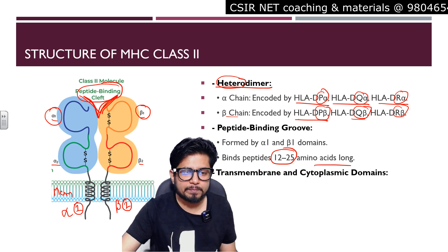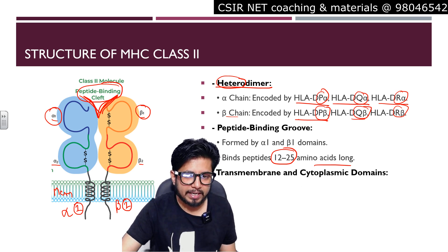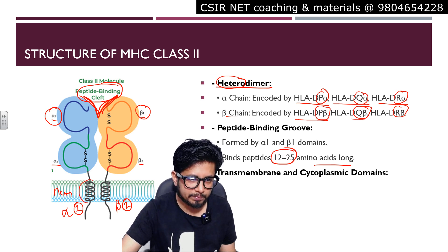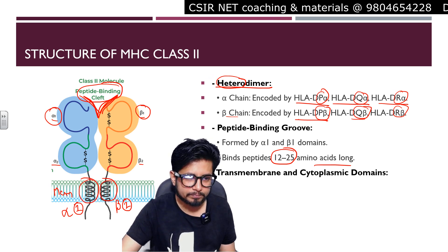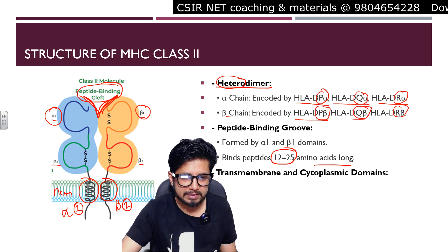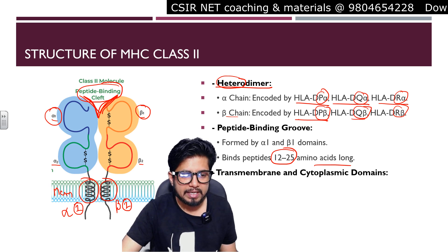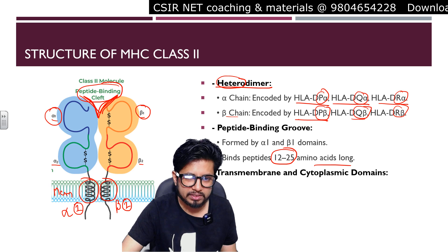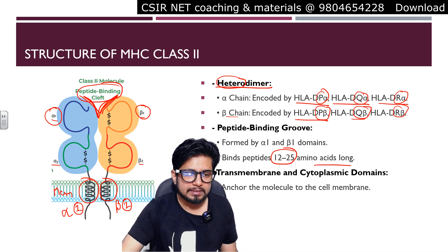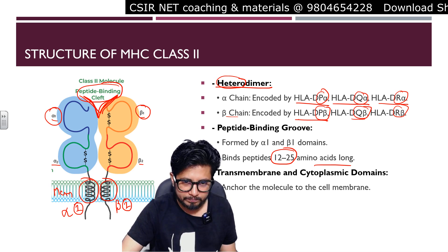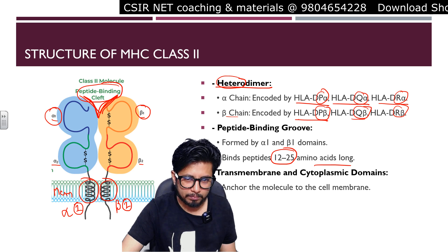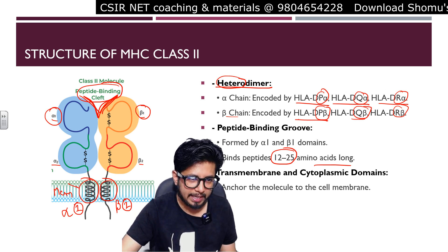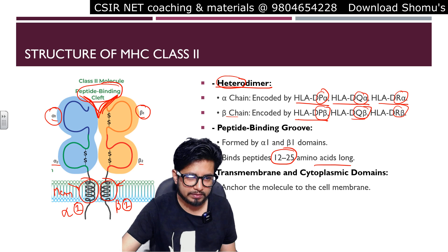Transmembrane and cytoplasmic domains are also found. This is the transmembrane domain — the protein is spanning the membrane and is anchored to the cell membrane. That is what the anchorage is all about, and the anchorage is visible here in the diagram.